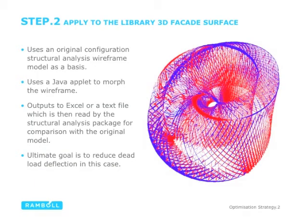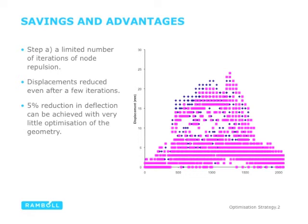In the final step we apply this to the Astana 3D surface. We use the original wireframe model as the basis and allow the structure to morph. By allowing the structure to morph even over a limited amount, the nodes show a 5% reduction in deflection with actually very little optimization of the geometry. Blue dots are the original nodes and the purple are the optimized ones.